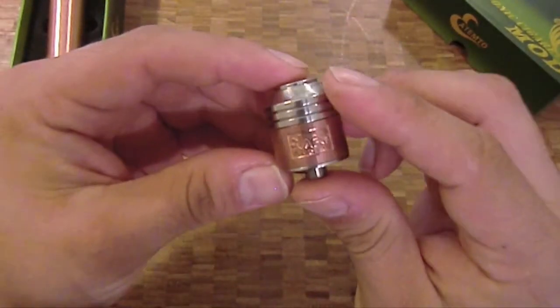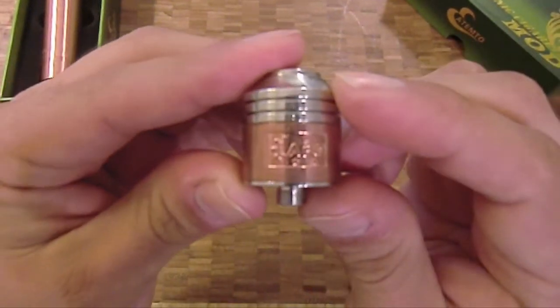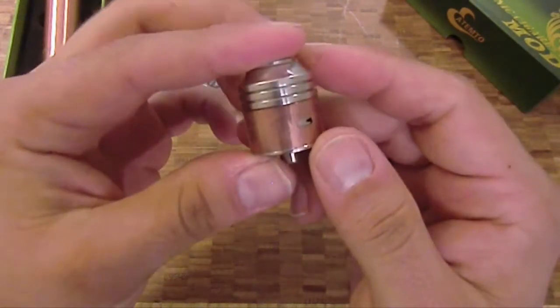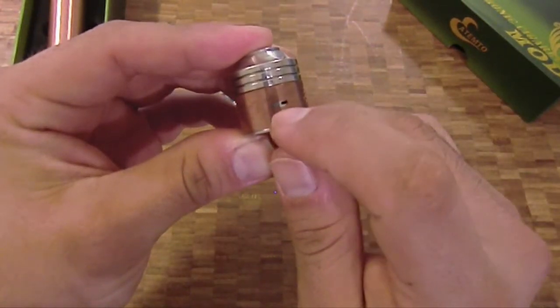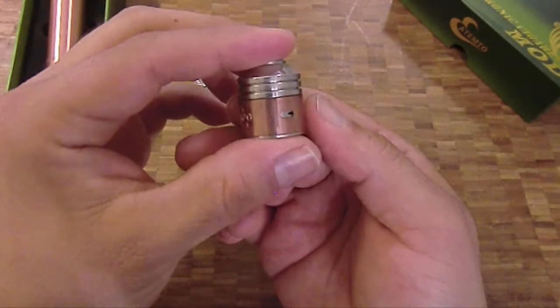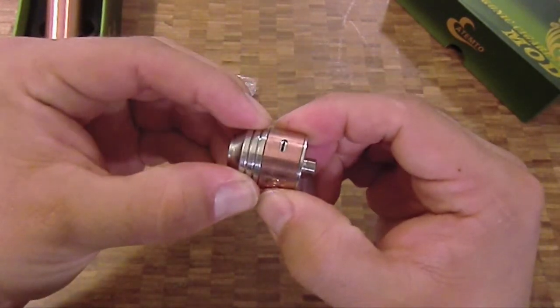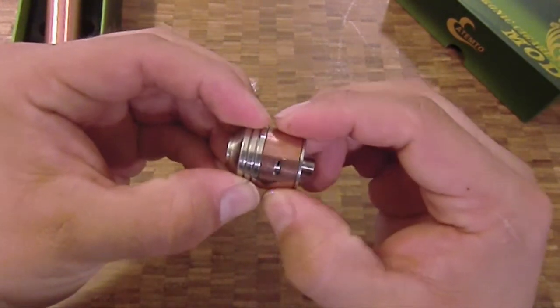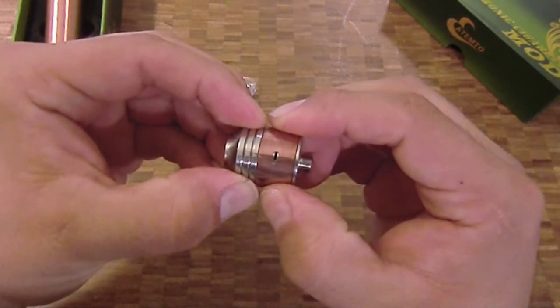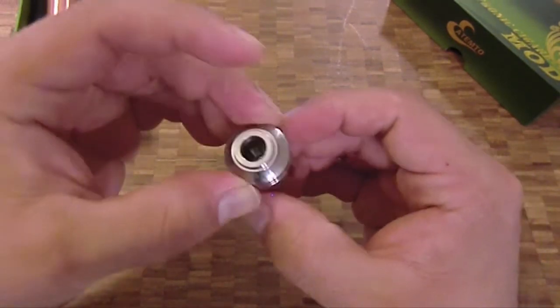Alright so here's the atomizer APO, you can see the logo there on the front. Two air holes on this side and on the other, and it does open just like that so you can adjust accordingly, very nice.